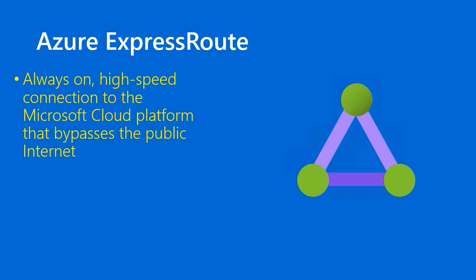Azure ExpressRoute is an always-on, high-speed connection to the Microsoft Cloud Platform. In that sense it's similar to Site-to-Site VPN. The key difference is that ExpressRoute bypasses the public internet. There are a number of specific connectivity models that Microsoft has for ExpressRoute, but we don't need to worry about them at the Azure Fundamentals level. What you do need to remember for your AZ-900 exam is that if you get a question about high-speed connectivity from your local data center into Azure where your security policy says you can't use the public internet — that keyword language tells you ExpressRoute is what you want to choose.